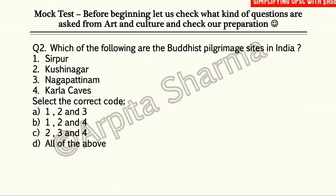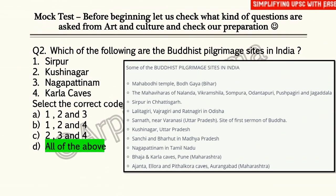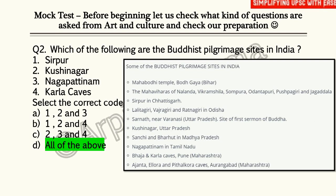The next question is: Which of the following are Buddhist pilgrimage sites in India? — Sirpur, Kushinagar, Nagapattinam, and Karla Caves. The correct answer is D — all of the above.